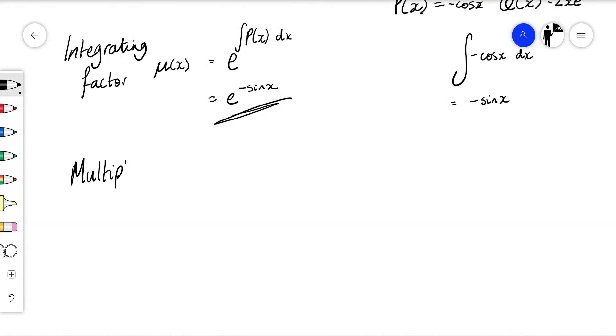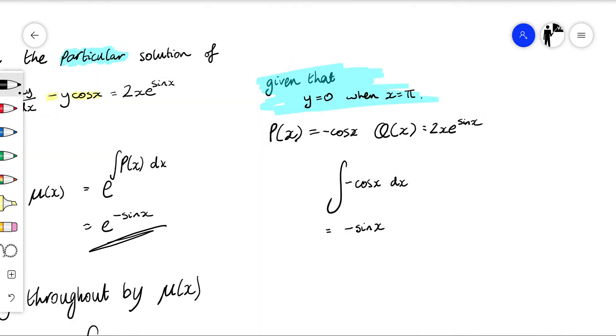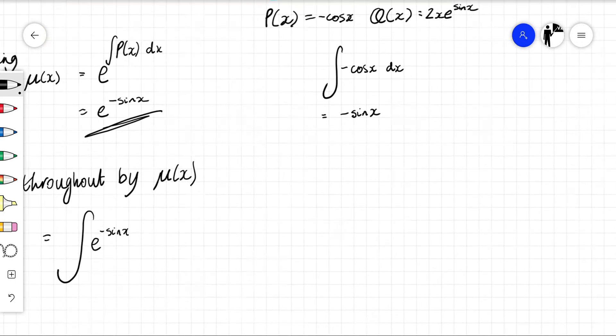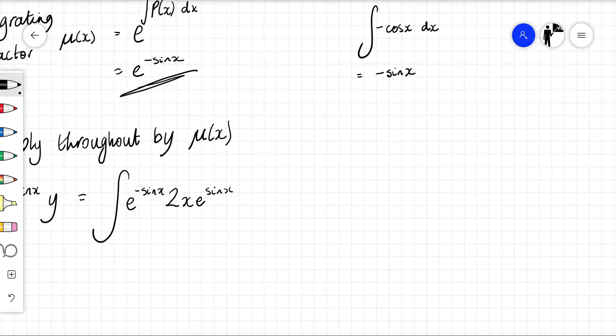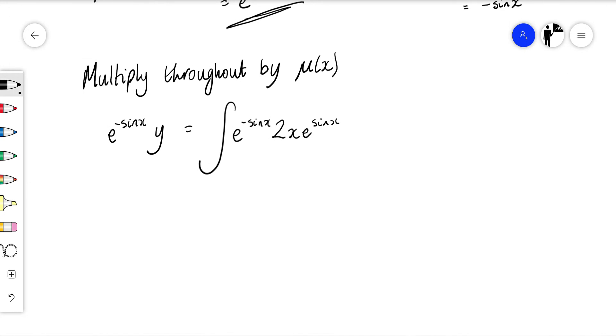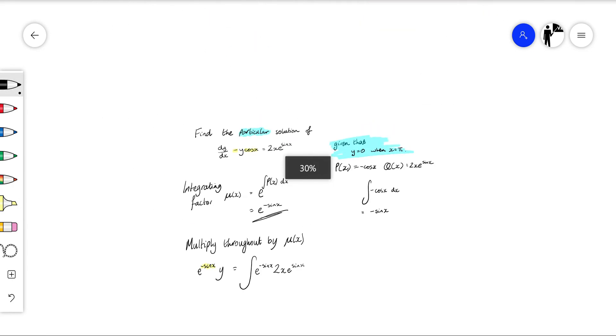Next stage is we multiply throughout by our integrating factor. Remember it always becomes the integrating factor times y equals the integral of the integrating factor times q of x. Q of x we already have - it's 2x e to the sine x. Let's see if we can do any simplification. I don't really like this with a negative power so I'm going to take that expression to the denominator.